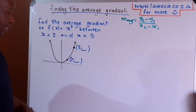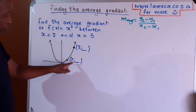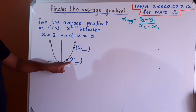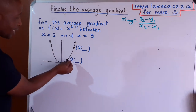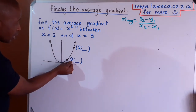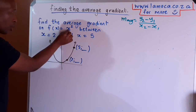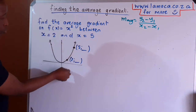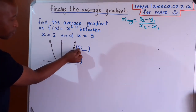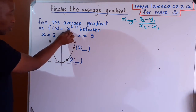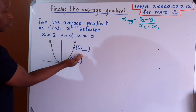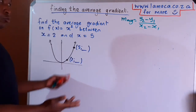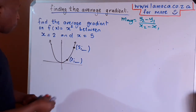What you will need to do first is work out the corresponding y value when x is 2. To do that, you simply take that 2 and substitute it into the equation of f of x — it will give you the corresponding y value. You do the same thing for 5: substitute into the equation of f of x and it will give you the corresponding value of y. Then you can work out whatever your gradient is going to be.